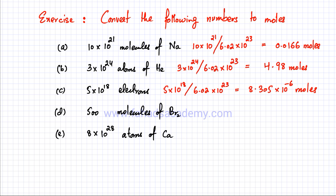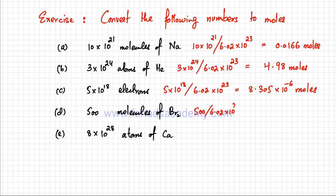For part (d), I have only 500 molecules of bromine — a very small number. Even though moles is used for very large numbers, you can still convert 500 molecules into moles by dividing 500 by 6.02 × 10²³. The answer is 8.3 × 10⁻²² moles.